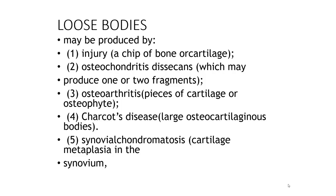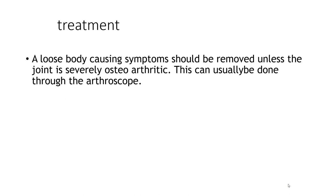Loose bodies are usually pieces of bone and cartilage. Sources may include a chip of bone and cartilage, osteochondritis dissecans as mentioned, a piece of osteophyte from osteoarthritis, Charcot disease, or synovial chondromatosis — five causes of loose bodies. Treatment: if loose bodies cause symptoms, they should be removed by arthroscopy, along with treatment of the primary disease depending on the original cause.